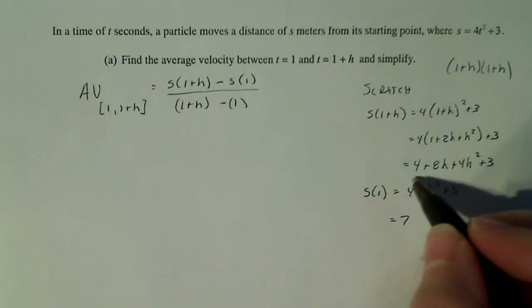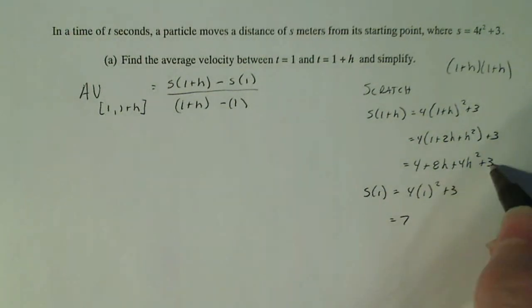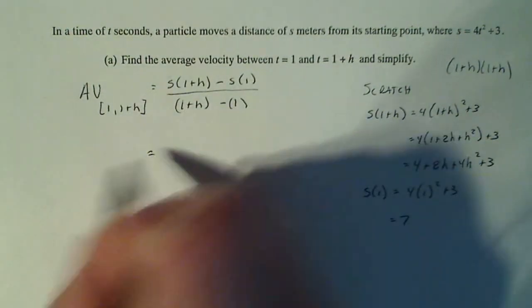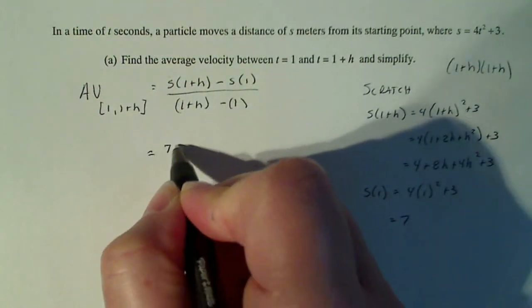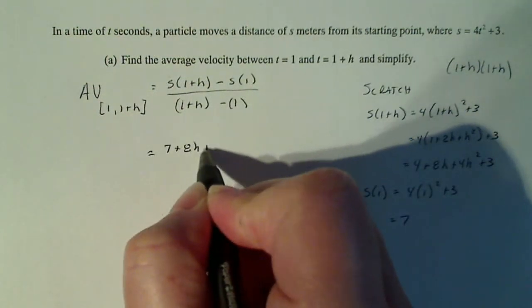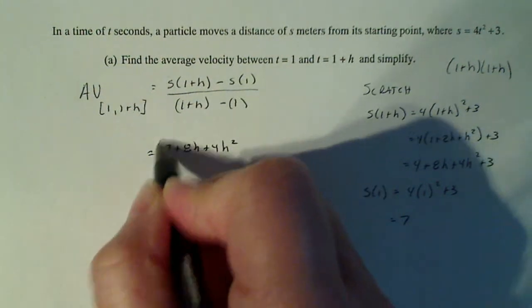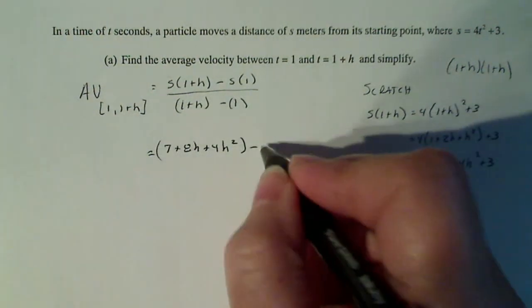Now, I think I can simplify this a little bit more by adding the 4 and the 3. I can do that over here. So s of 1 plus h is going to be 7 plus 8h plus 4h² minus 7,